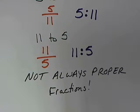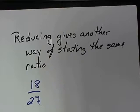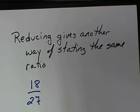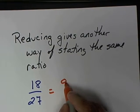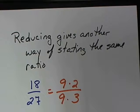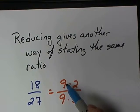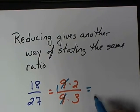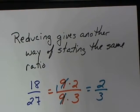Sometimes the ratio that is given needs to be reduced, just like when we reduced our fractions. It's a way of stating the same ratio. So this ratio is 18 to 27. We know we can reduce that because 9 goes into both of those. I can rewrite 18 as 9 times 2, and 27 as 9 times 3. Any number over itself is 1, and 1 times any number leaves me with that number. So I'm left with 2 thirds. The ratio of 18 to 27 is equivalent to the ratio 2 to 3, or 2 thirds.